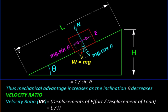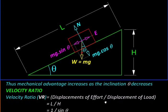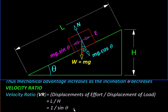So we will calculate velocity ratio as displacement of effort upon displacement of load. Mind you, this is to be measured along the direction of force, so it will be l divided by h and which turns out to be 1 upon sin theta again.